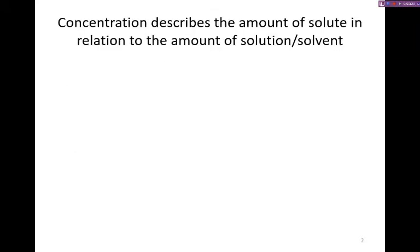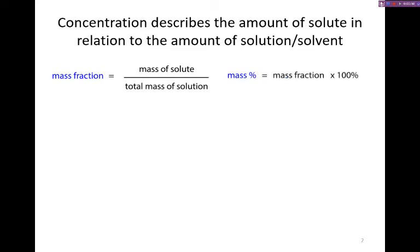Concentration tells us the amount of solute in relation to the amount of solution or solvent, and which of those two is in the denominator depends on the definition that we use. We've talked already about mass fraction, defined as the mass of solute per mass of solution. If we want to find the mass percent, that's simply the mass fraction times 100%. We've also already looked at mole fraction when we've talked about gases. This is expressed as x sub i and this is the moles of solute per total moles of solution. Notice that the only difference between these two is whether we're using mass versus moles.